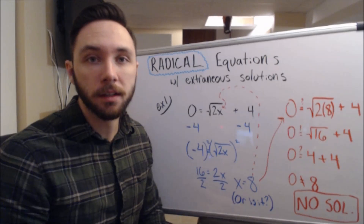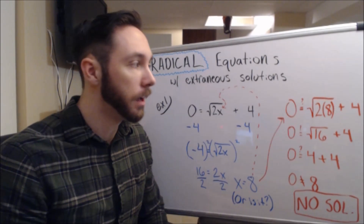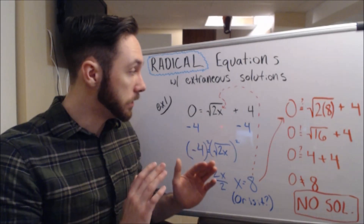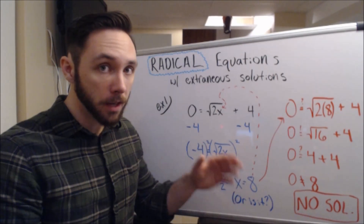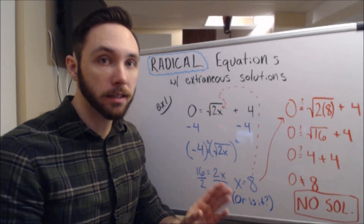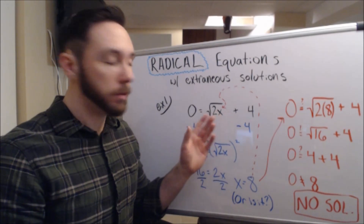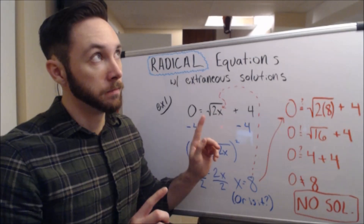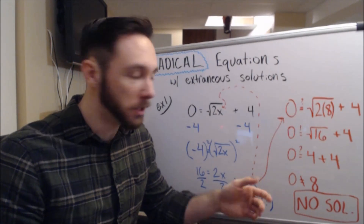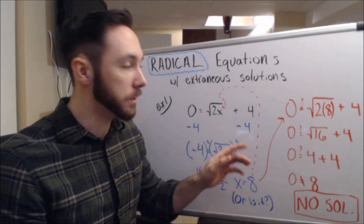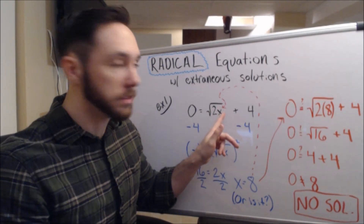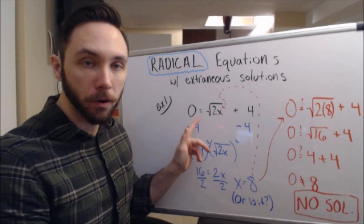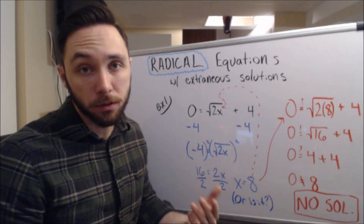So let me convince you that extraneous solutions is a thing and what we do to address them. When you're solving radical equations, the idea is to just solve it and then once you have your answer, check to see if it works. So here I have 0 is equal to the square root of 2x, and then plus 4. Notice the pause because the radical kind of just ends and then plus 4 is at the end. Anyway, first thing — move over that 4.